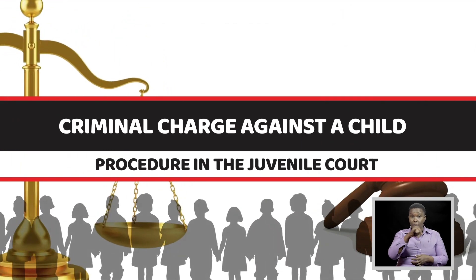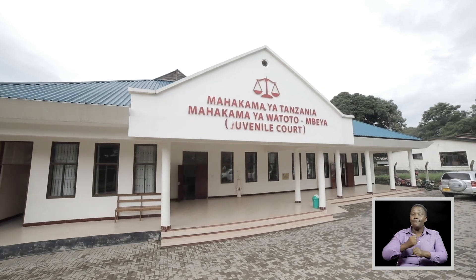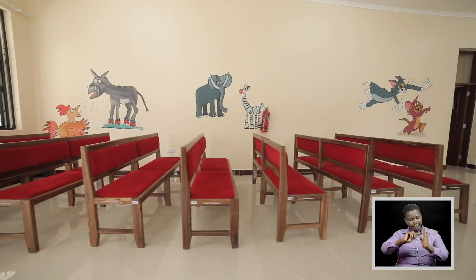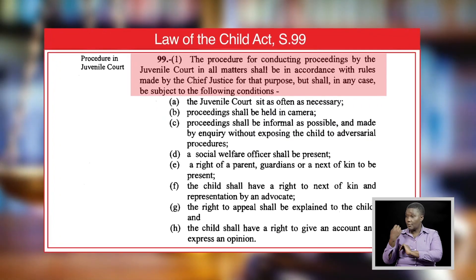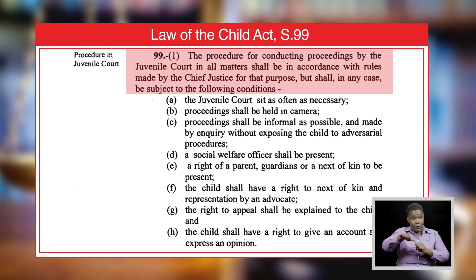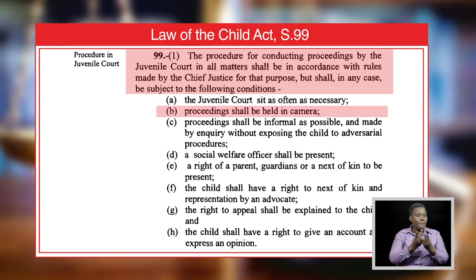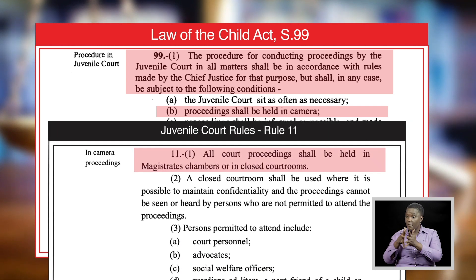Criminal Charge Against a Child. The procedure for conducting proceedings by the juvenile courts shall be according to the juvenile court rules as made under Section 99, Subsection 1 of the Law of the Child Act, but under the following conditions: the juvenile court sits as often as necessary; proceedings shall be held in camera — meaning proceedings are not open for the public to see, and even the media is strictly forbidden from reporting. The magistrate or judge should adhere to this particular principle.